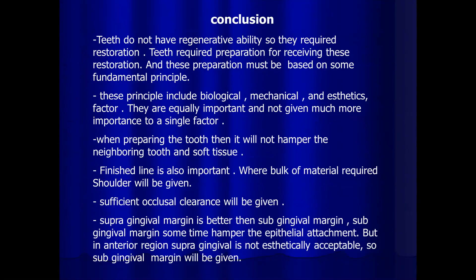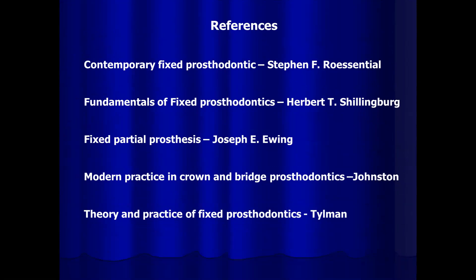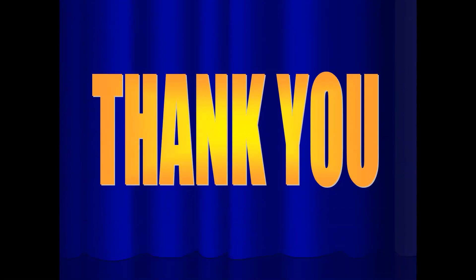In conclusion, teeth do not have regenerative ability, so they require restoration and preparation based on fundamental principles. These principles include biological, mechanical, and aesthetic factors, which are equally important. Tooth preparation should not hamper neighboring teeth or soft tissue. Finish lines are important — shoulder margins provide bulk, sufficient occlusal clearance is needed, and supragingival margins are preferable to subgingival margins. However, in the anterior region, subgingival margins may be necessary for aesthetics. Thank you so much.